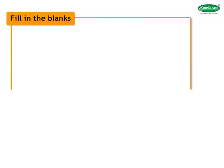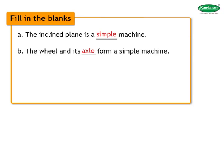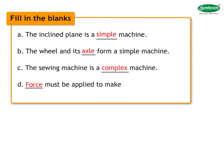Fill in the blanks. A. The inclined plane is a simple machine. B. The wheel and its axle form a simple machine. C. The sewing machine is a complex machine. D. Force must be applied to make a machine work.